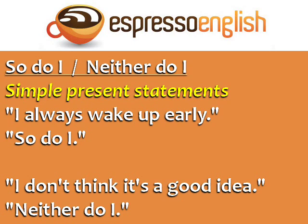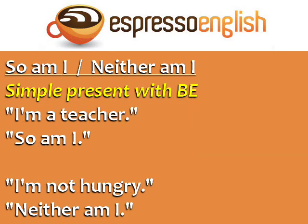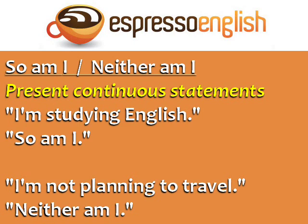For example: 'I always wake up early' — so do I. 'I don't think it's a good idea' — neither do I. You can say 'so am I' or 'neither am I' to agree with a simple present statement with be. 'I'm a teacher' — so am I. 'I'm not hungry' — neither am I.